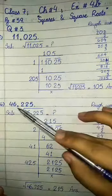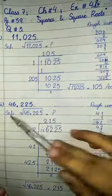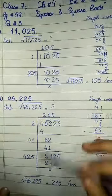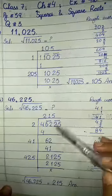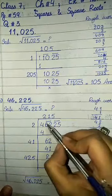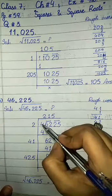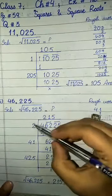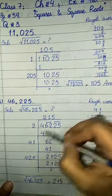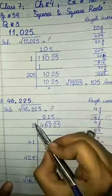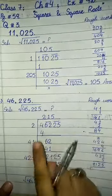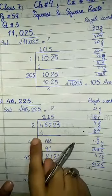Now we will solve part number 3: 46,225. Write the solution with a square root sign and question mark, then the long division sign, and place the number. Start pairing from the right: 25 is one pair, 62 is one pair, and 4 is completely single. So we write the closest square to 4, which is 4 itself — 2 × 2 = 4. So we write 2 as our first quotient digit. 4 minus 4 leaves 0, then bring down 62 as the next period.